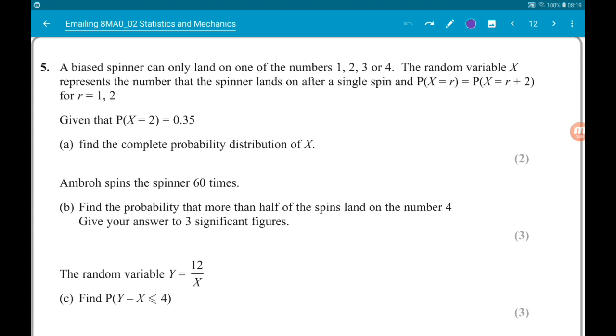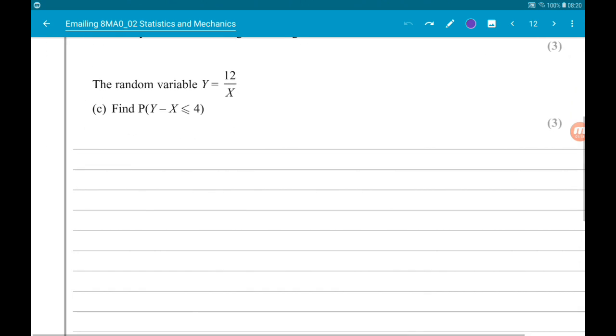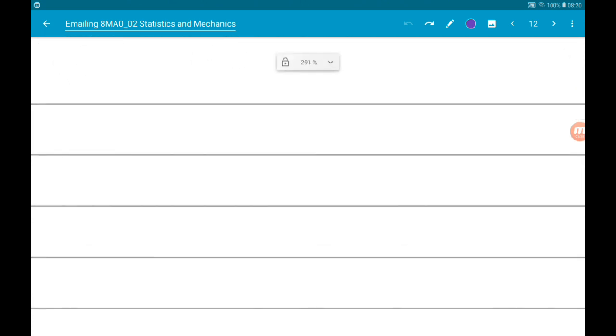So part A, given that the probability of X equals 2 is 0.35, we need to find the complete probability distribution of X. Okay, so what that means is, what's the probability X equals 1, X equals 2, X equals 3, and X equals 4.